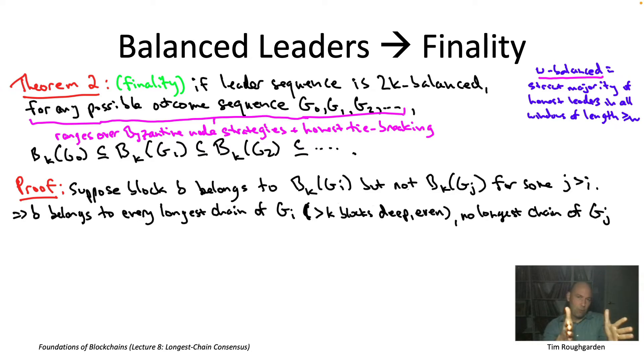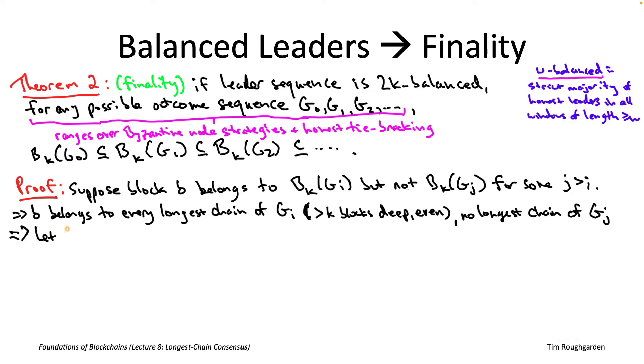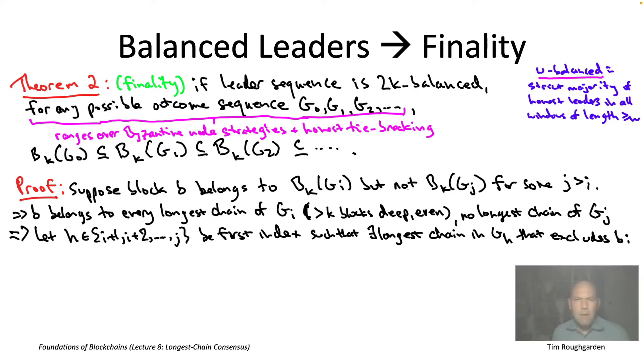So, there must be some transition point, call it g sub h, where, for the first time, there exists a longest chain in the graph, which excludes this block, little b. So, this is like the first point at which little b is about to get dislodged from a longest chain.